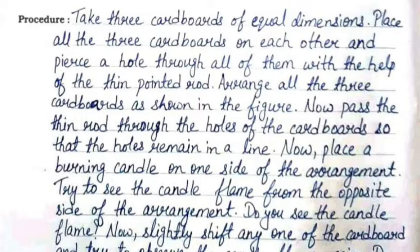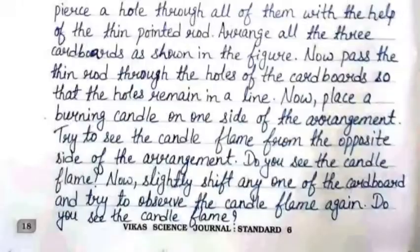Now pass the thin rod through the holes of the cardboards so that the holes remain in a line. Now place a burning candle on one side of the arrangement. Try to see the candle flame from the opposite side of the arrangement. Do you see the candle flame? Now slightly shift any one of the cardboards and try to observe the candle flame again. Do you see the candle flame?